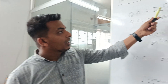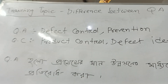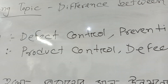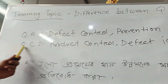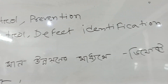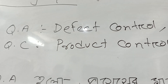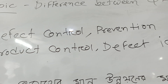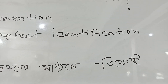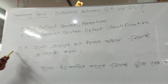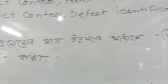QA is defect prevention. QC is product control and defect identification. The focus is on preventing defects and identifying changes in the product.